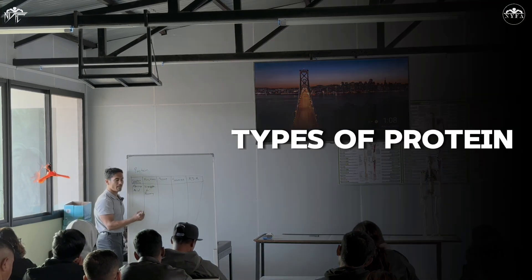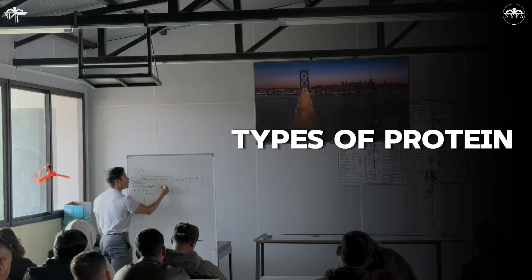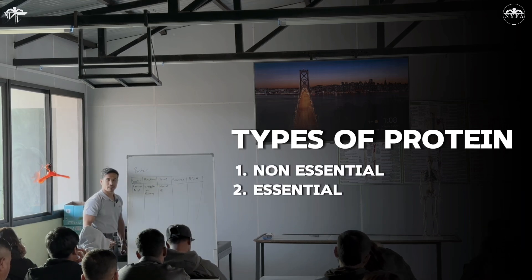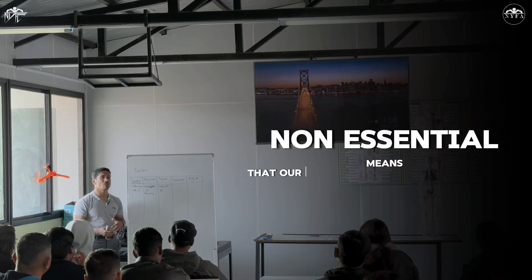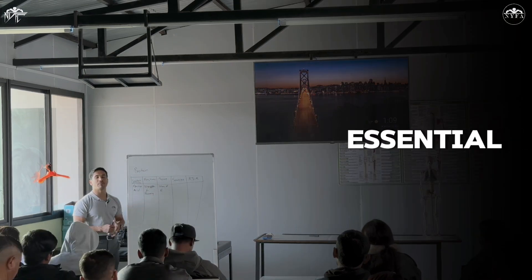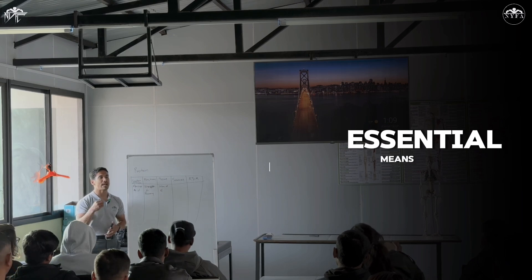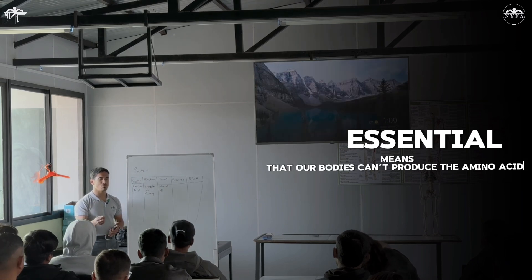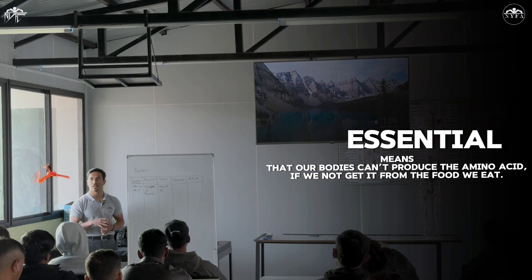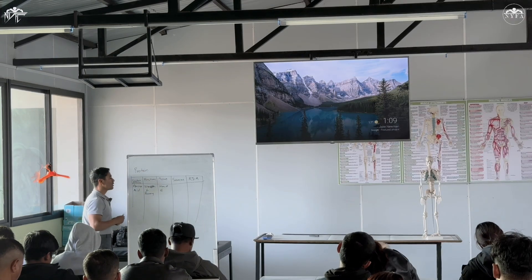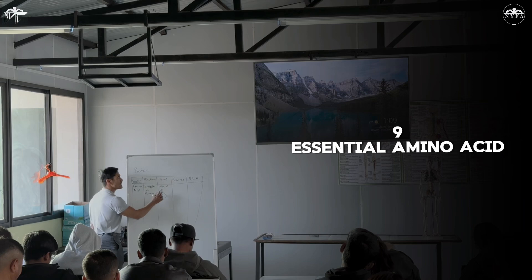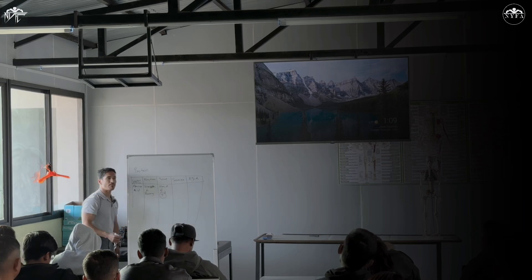What types of amino acids are there? Non-essential and essential. Essential amino acids are those which cannot be made by the body and must come from food. There are 9 essential amino acids.